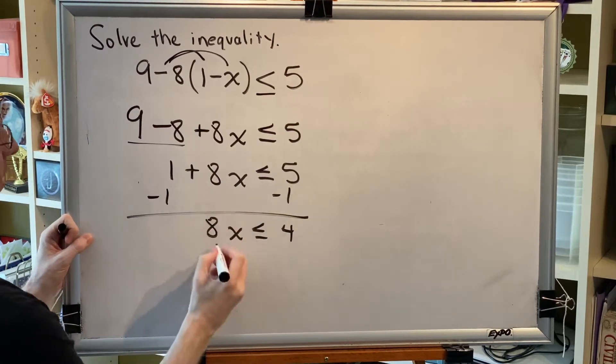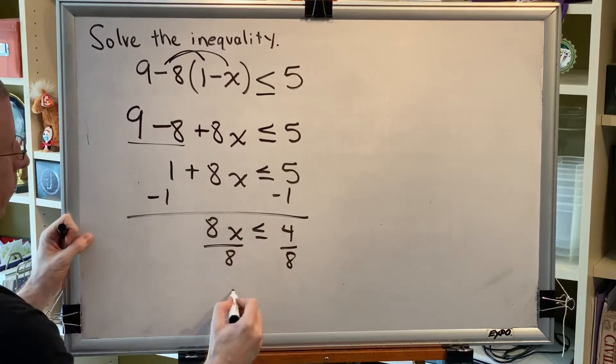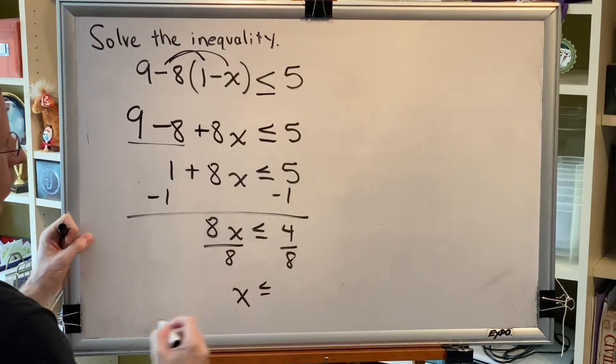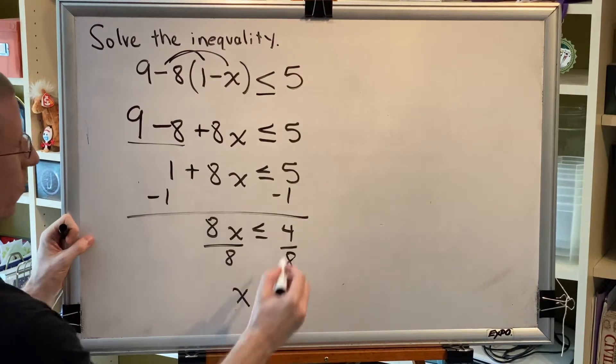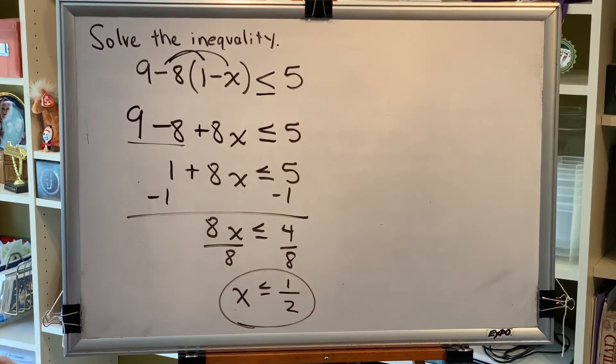Next, divide both sides by the positive quantity 8. And remember that because it's positive, we do not have to swap our sign. So we get x is less than or equal to 4 eighths, which reduces to 1 half. So our answer is x is less than or equal to 1 half.